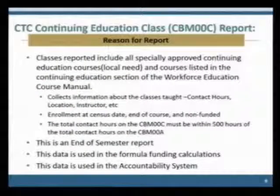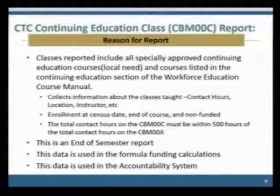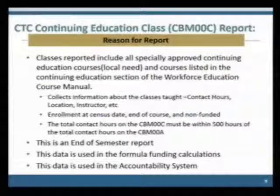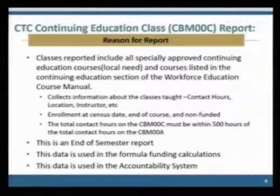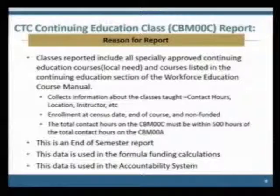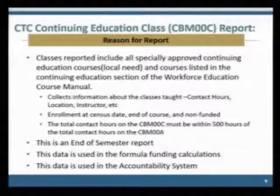The CMOOC is the continuing education class report. Classes reported must include all specially approved continuing ed courses, courses referred to as local need, and courses listed in the continuing education section of the Workforce Education Course Manual, or WECM. We collect information about the classes taught, contact hours, location, instructor, etc. Enrollments at census date and end of course, including non-funded, are produced. Total contact hours on the C must be within 500 contact hours of those on the A. This is an end-of-semester report, and the data is used in formula funding calculations and the accountability system.